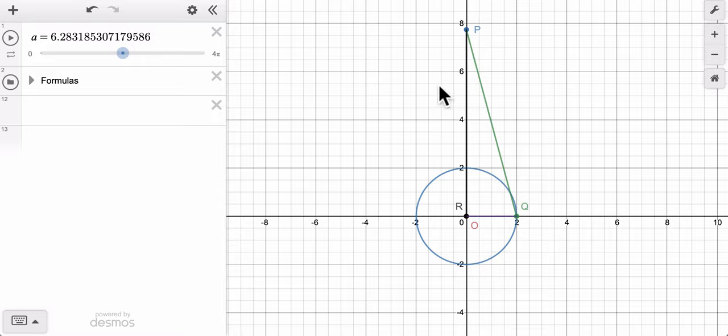You're attempting to create a model of the piston problem, number 26, on page 498. And the way the model should work is I should be able to toggle the angle A from 0 all the way up to, in increments of, let's say, pi over 12 radians, all the way up to 4 pi.